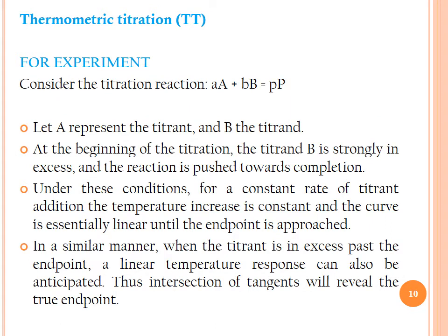For an experiment, consider the reaction: aA + bB → pP, where A represents the titrant and B the titrand; a, b, and p are the numbers of moles. At the beginning of the titration, the titrand B is in excess and the reaction proceeds toward completion. Under these conditions, for a constant rate of titrant addition, the temperature increase is constant and the curve is essentially linear until the endpoint is approached. Similarly, when the titrant is in excess past the endpoint, a linear temperature response can again be anticipated. Thus, the intersection of tangents reveals the true endpoint.